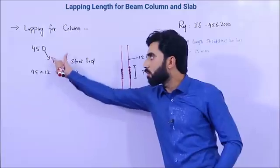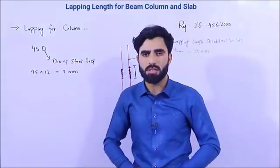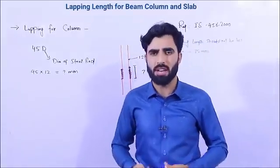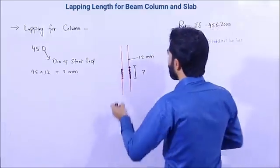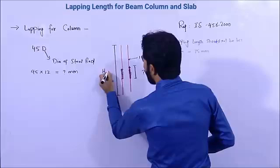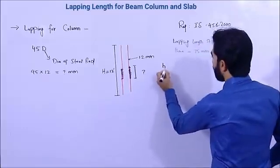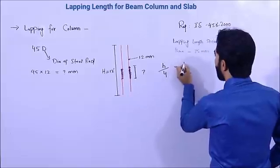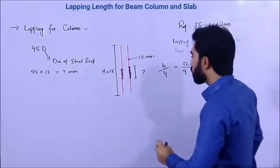The lap length formula for column is 45d. Now, where is the proper place to provide lap length? This is very important. For example, if the height of the column is 12 feet, divide the height by 4: 12 ÷ 4 = 3 feet.